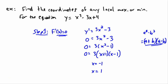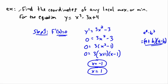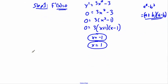So step one is done — I've found where f-prime of x equals zero. I've got two spots: x equals negative one and x equals one. Now I have to do step two, which is all about using a sign diagram. I'll extend the page a little bit and do step two now.